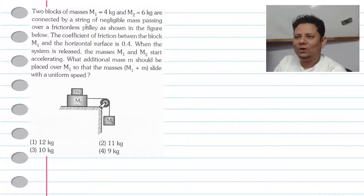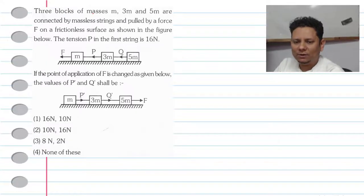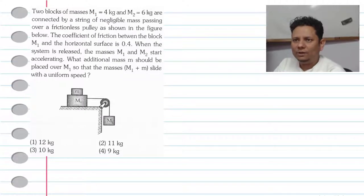Next question: Two blocks of masses m1 = 4 kg and m2 = 6 kg are connected by a string of negligible mass passing over a frictionless pulley as shown in the figure below. The coefficient of friction between block m1 and the horizontal surface is μ = 0.4. When the system is released, masses m1 and m2 start accelerating.